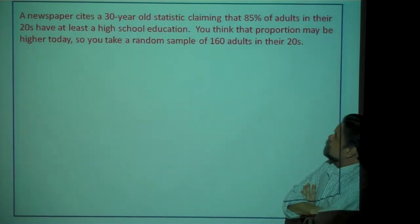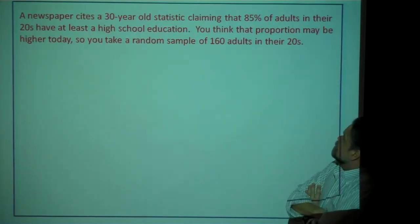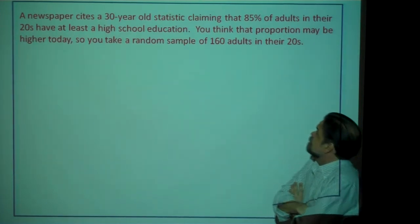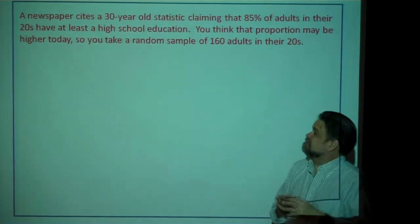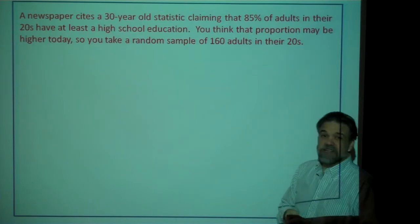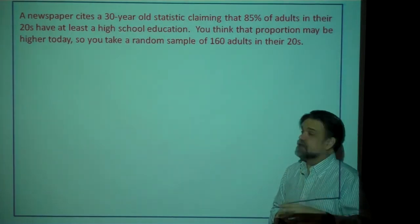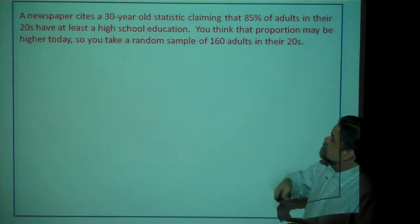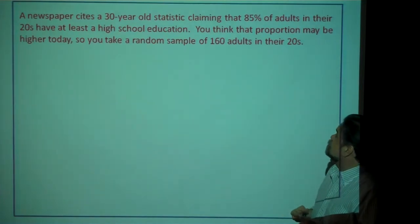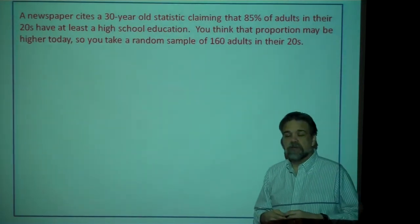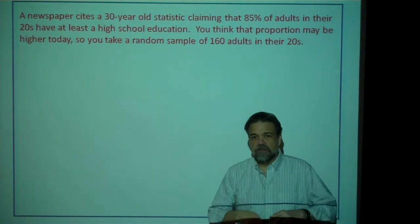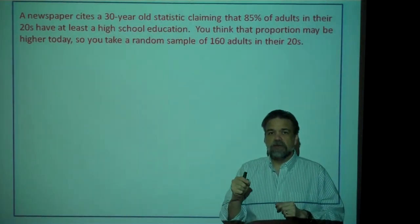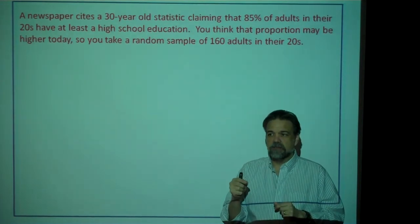A newspaper cites a 30-year-old statistic claiming that 85% of adults in their 20s have at least a high school education. You think, 85% seems kind of low — I think these days that's actually going to be higher. So you think the proportion may be higher today, so you take a random sample of 120 adults in their 20s. You're taking a random sample and measuring the proportion of those people that have at least a high school education.